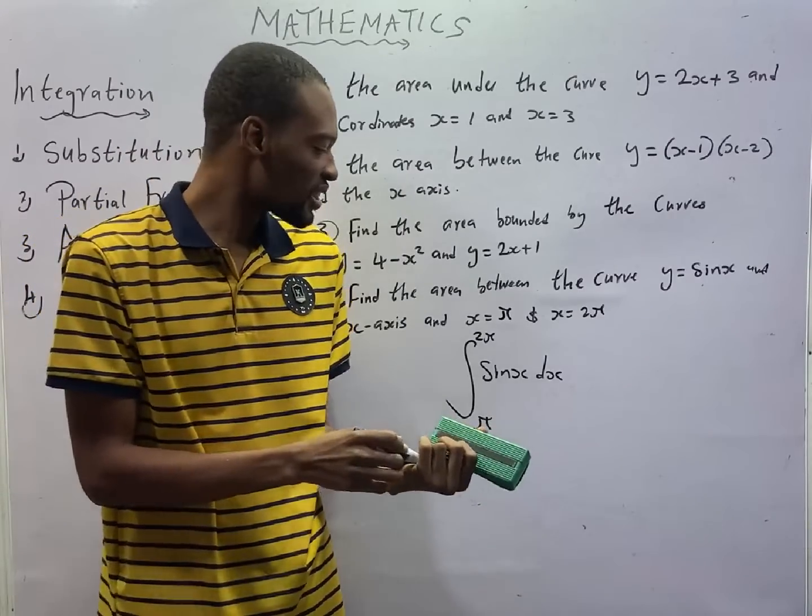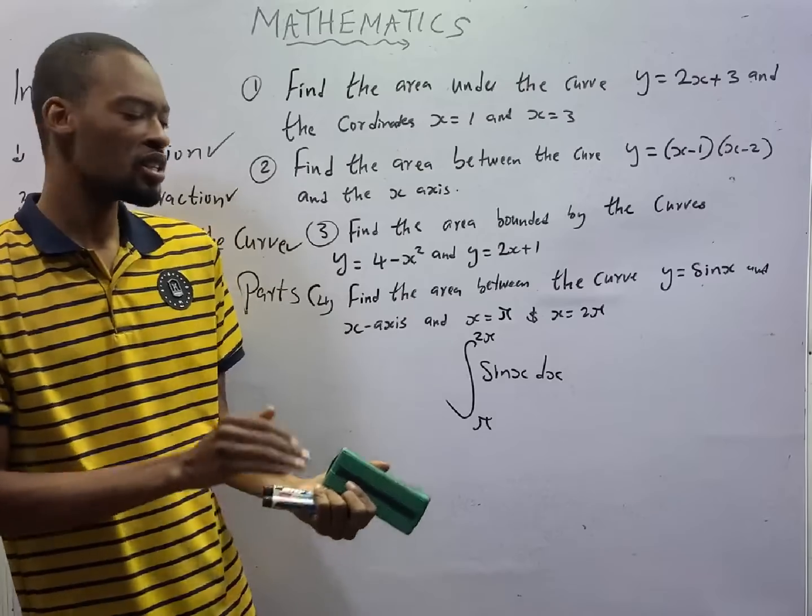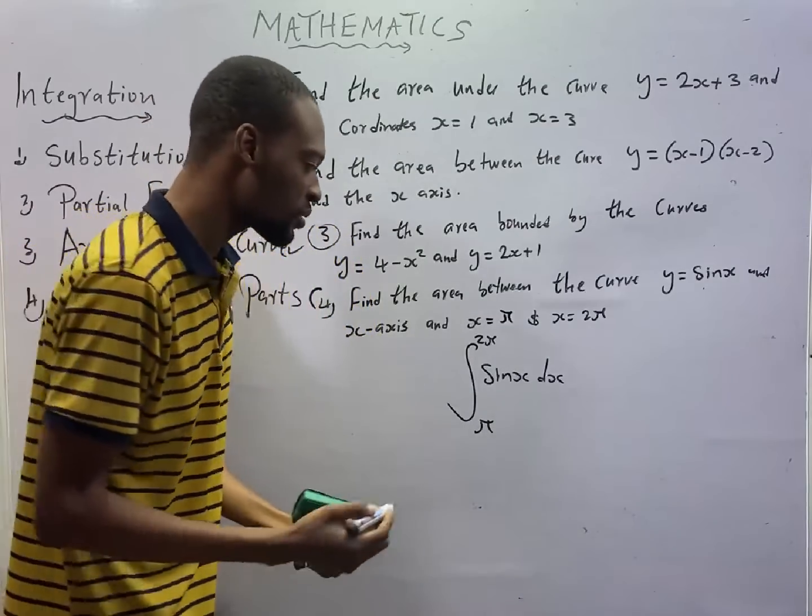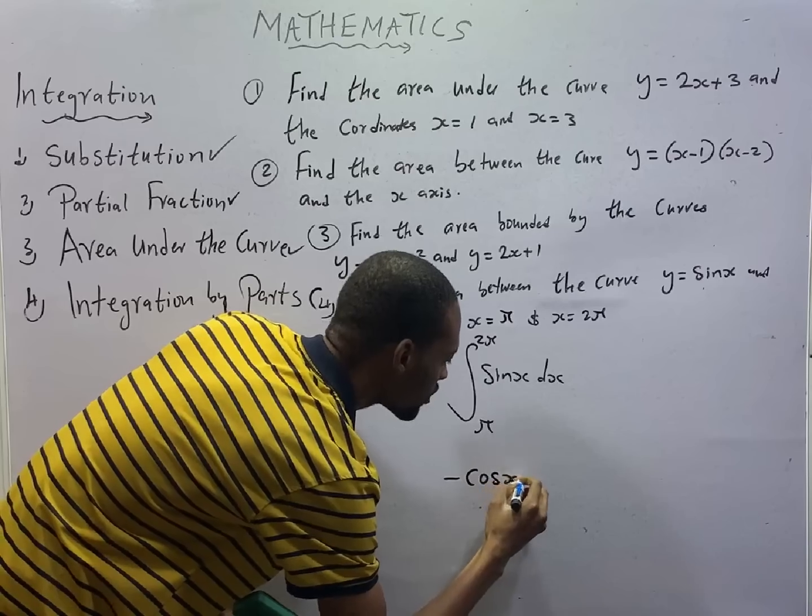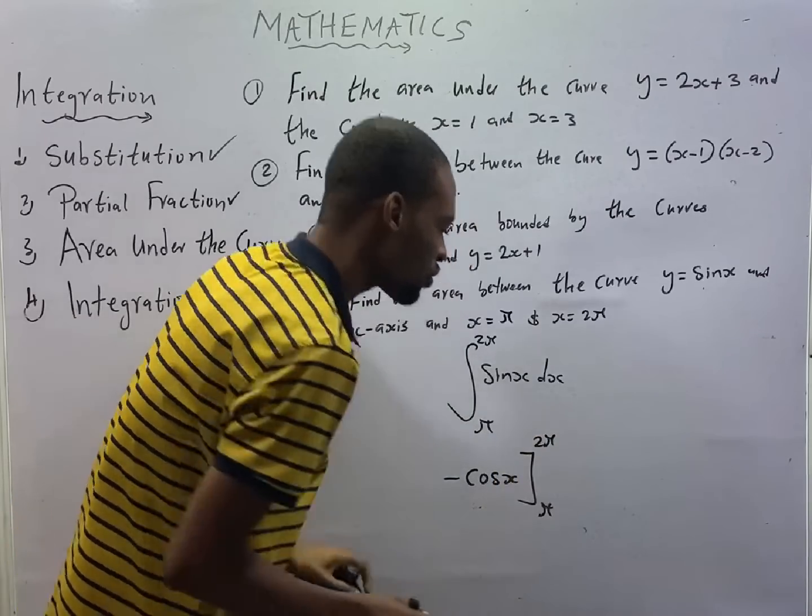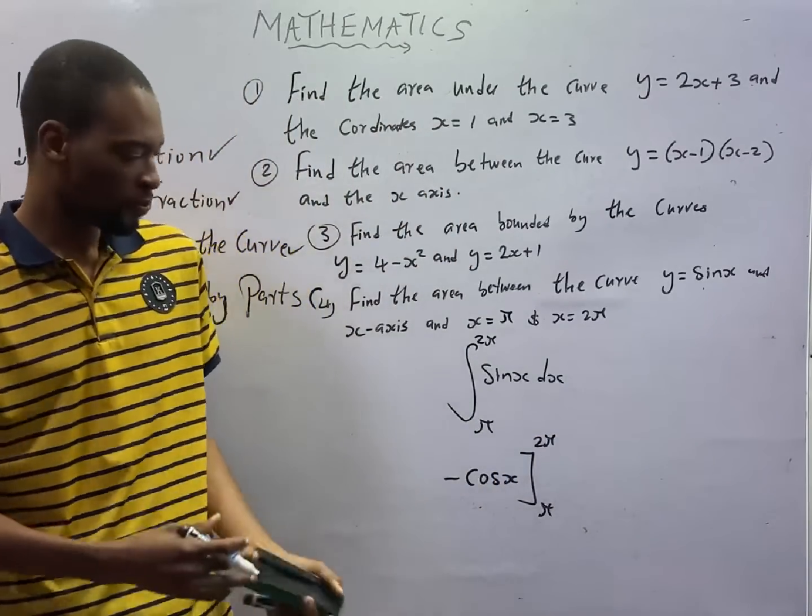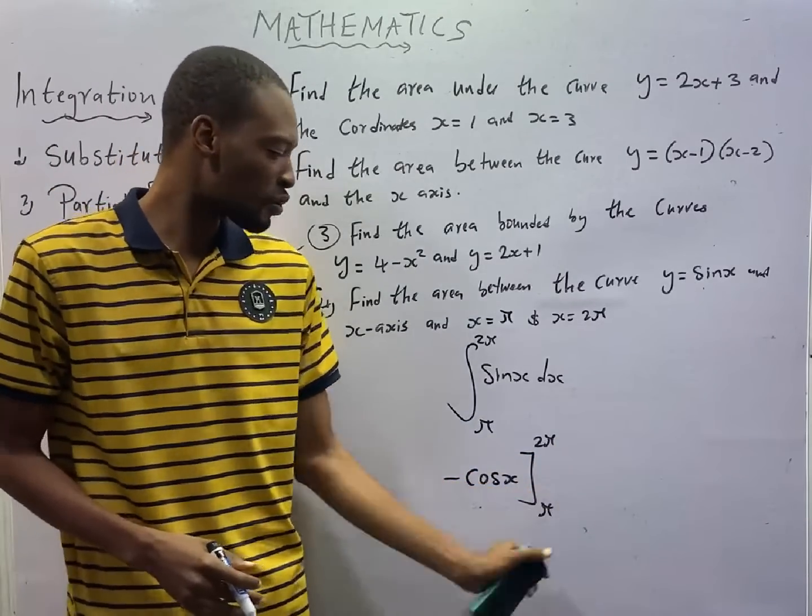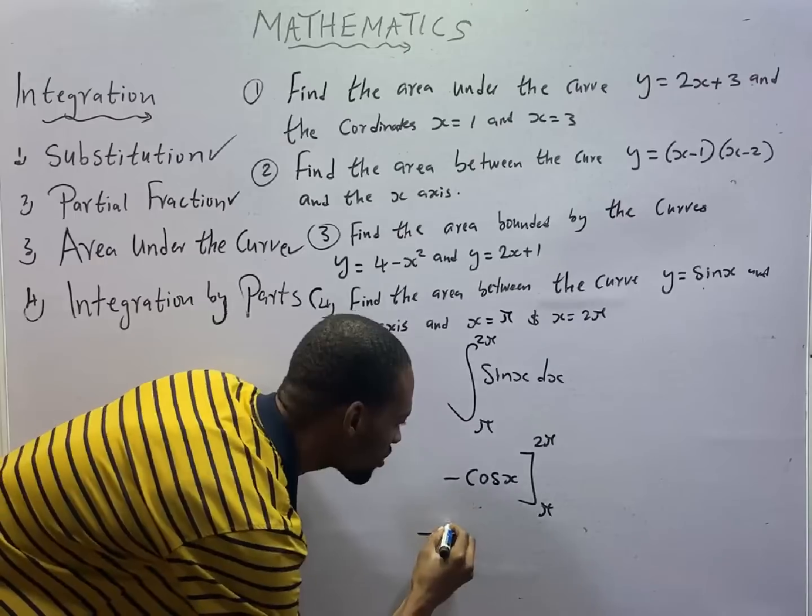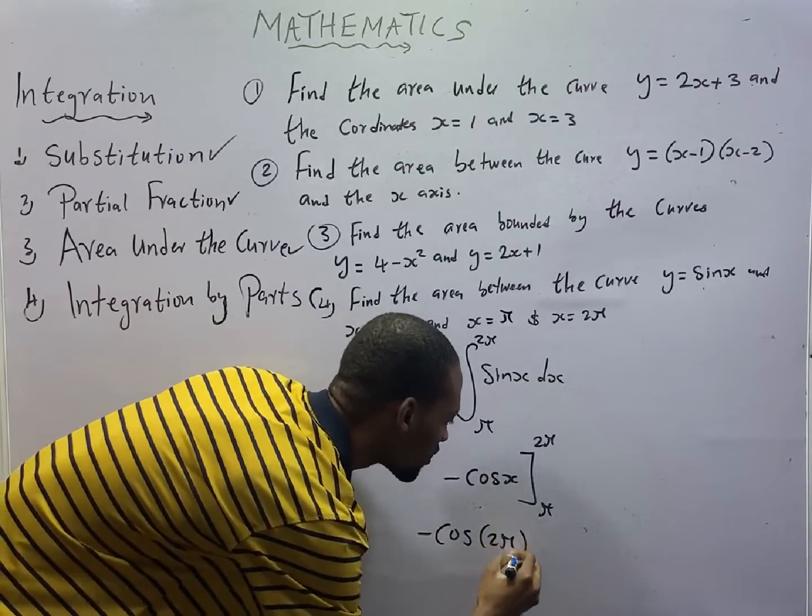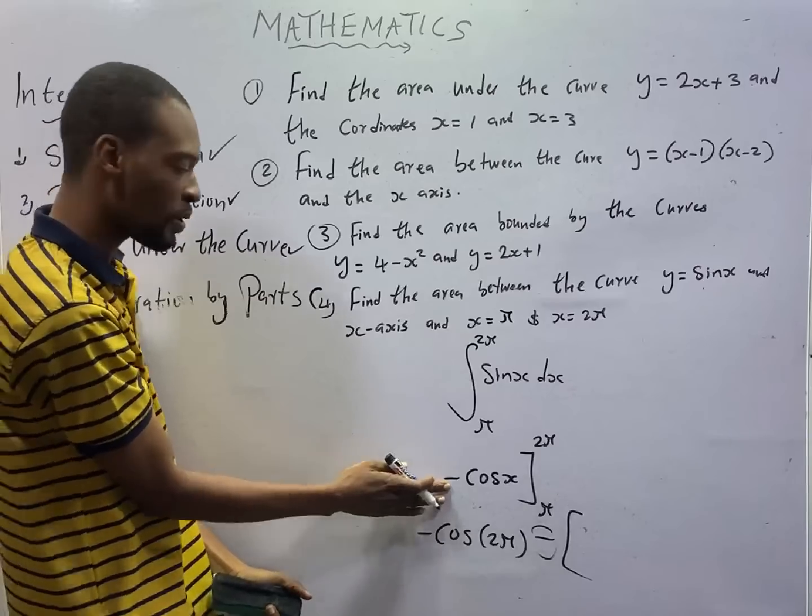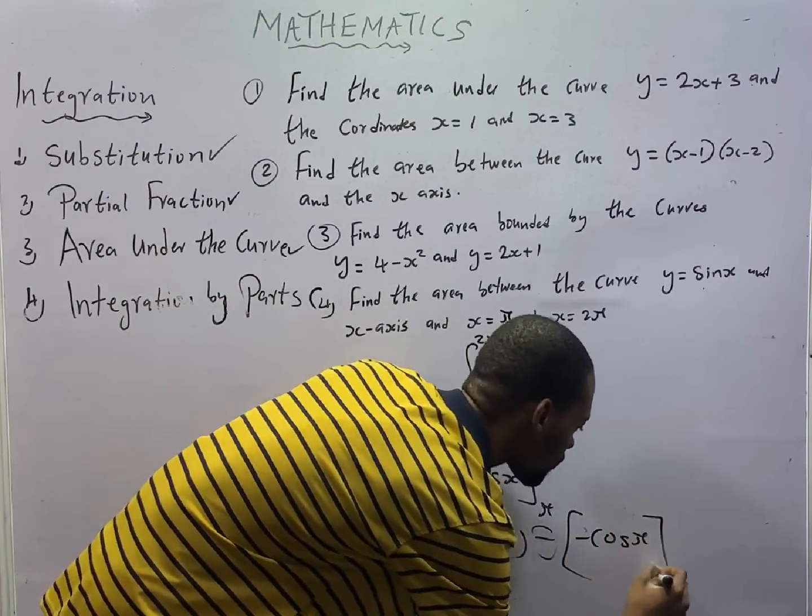Integrate sin x dx from π to 2π. What do you get when you integrate sin theta? When you integrate sin theta, you get minus cos theta. When you integrate sin x, you get minus cos x. So, that will simply be minus cos x. Then you introduce your limit. The lower limit is π, while the upper limit is 2π. And for definite integrals, you substitute the upper limit, then you subtract from substituting the lower limit.